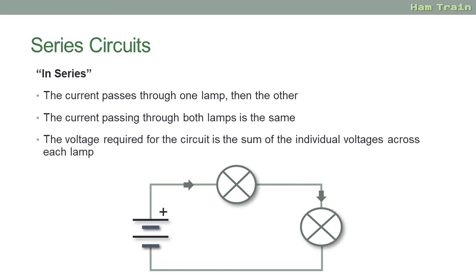This circuit has a battery and two lamps or bulbs. The current is flowing from the battery into the first lamp, then into the second lamp and then back to the other part of the battery. The current that's flowing through both lamps is the same, and the voltage that's required for the circuit is the sum of the individual voltages across each lamp. Sounds confusing, but let's break it down.